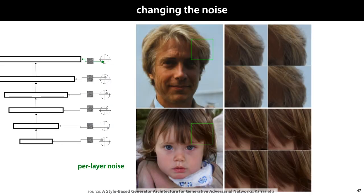Let's look at the other side of the network — the noise inputs. What we do here is we keep all the latent and noise inputs the same, except for the very last noise input, and we generate four different images where this input vector is resampled. We can see what the noise achieves: the man stays the same and his hair is equally messy in each generated example, but exactly in what way it's messy changes per sample. In order to generate this image, the network needs to determine the precise orientation of each individual hair that is visible, and this requires a lot of randomness which the latent vector cannot provide just by itself.